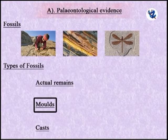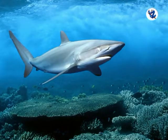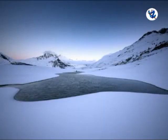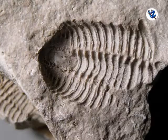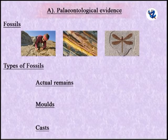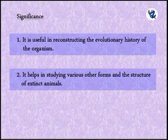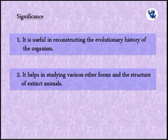Types of fossils fall under three main categories: actual remains, which are generally formed in the deep oceans when dead bodies sink to the bottom of the sea or are incorporated in ice; moulds, which are impressions of body parts left on soft mud on the oceanic floor; and casts, when the cavities of a mould get filled with minerals and harden into stone. Fossils are useful in reconstructing the evolutionary history of organisms and help in studying the forms and structures of extinct animals.